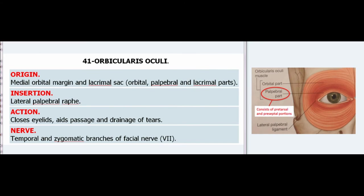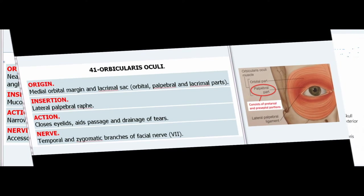41. Orbicularis Oculi. Origin: Medial orbital margin and lacrimal sac — orbital, palpebral, and lacrimal parts. Insertion: Lateral palpebral raphe. Action: Closes eyelids, aids passage and drainage of tears. Nerve: Temporal and zygomatic branches of facial nerve (VII).